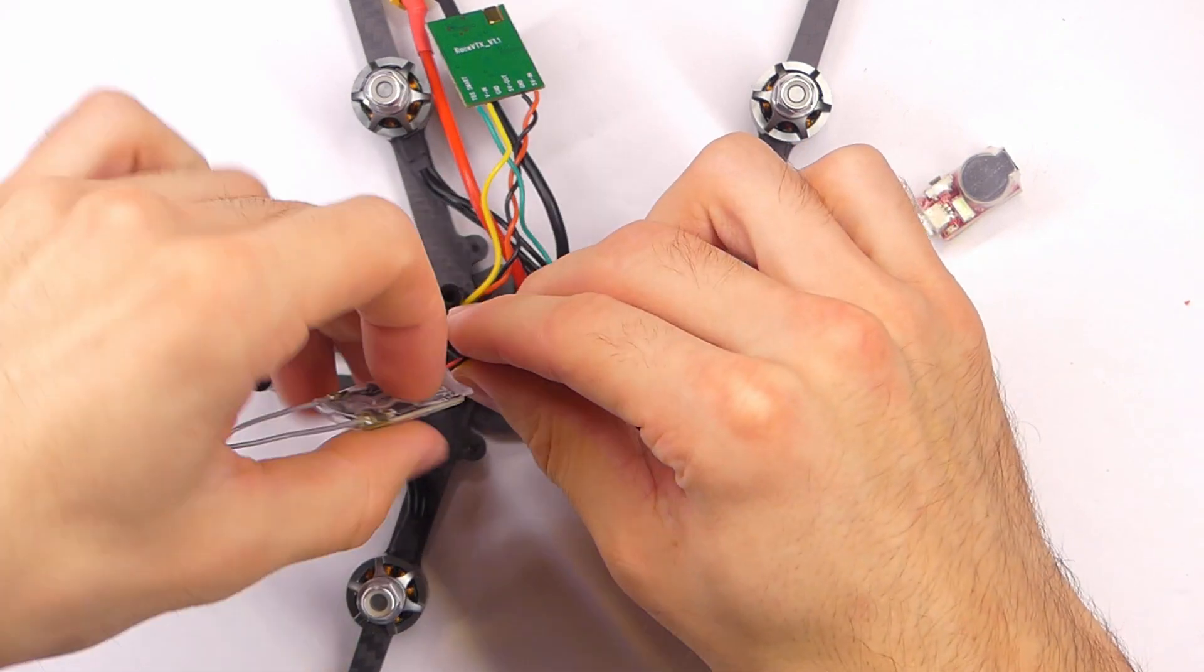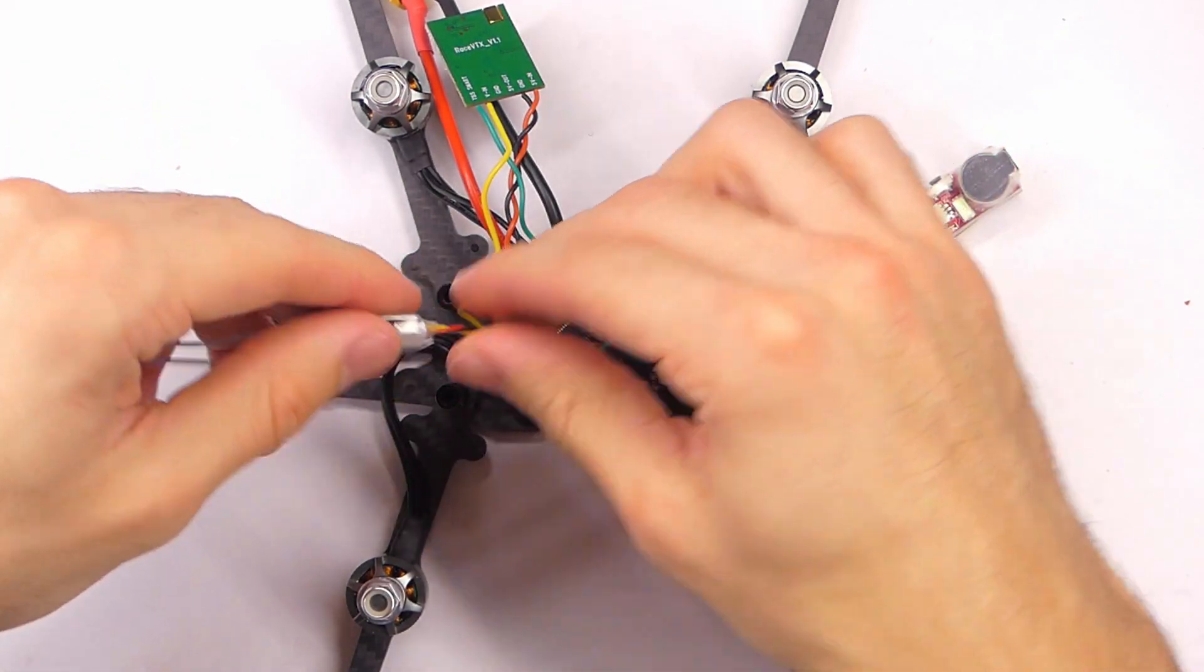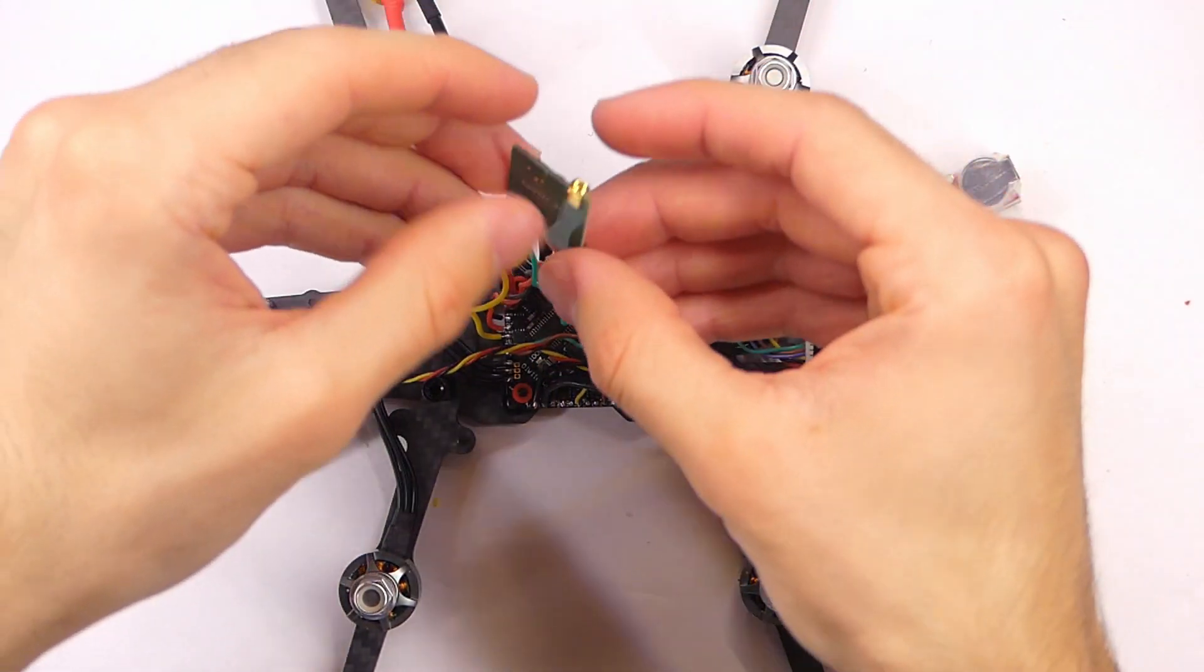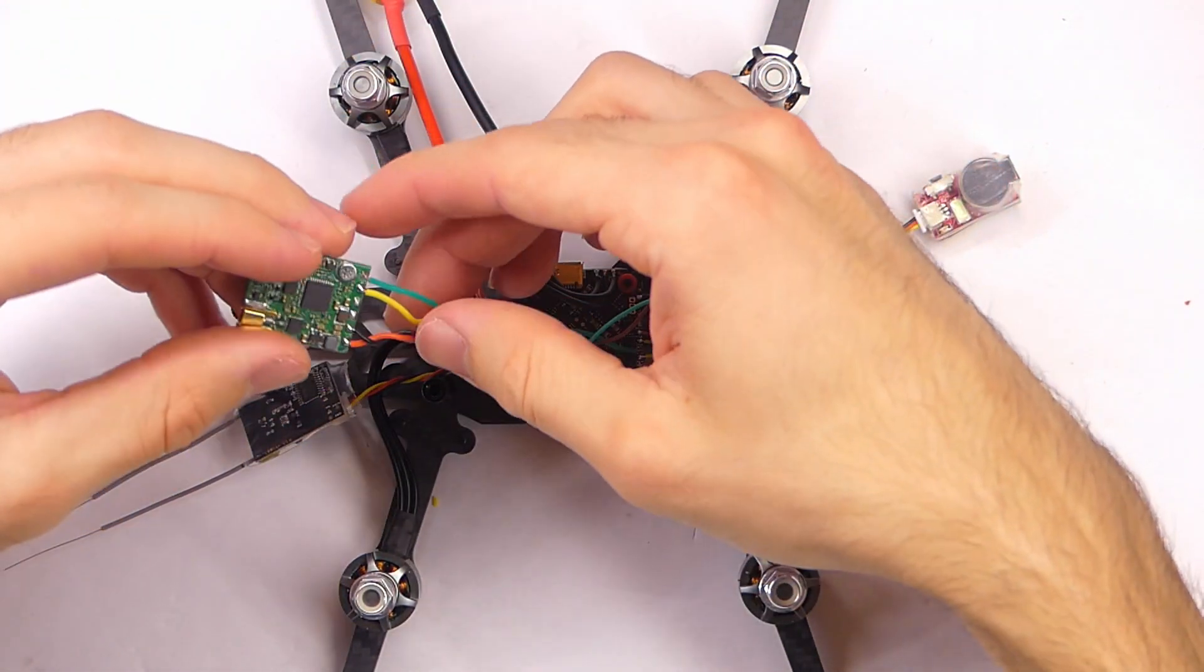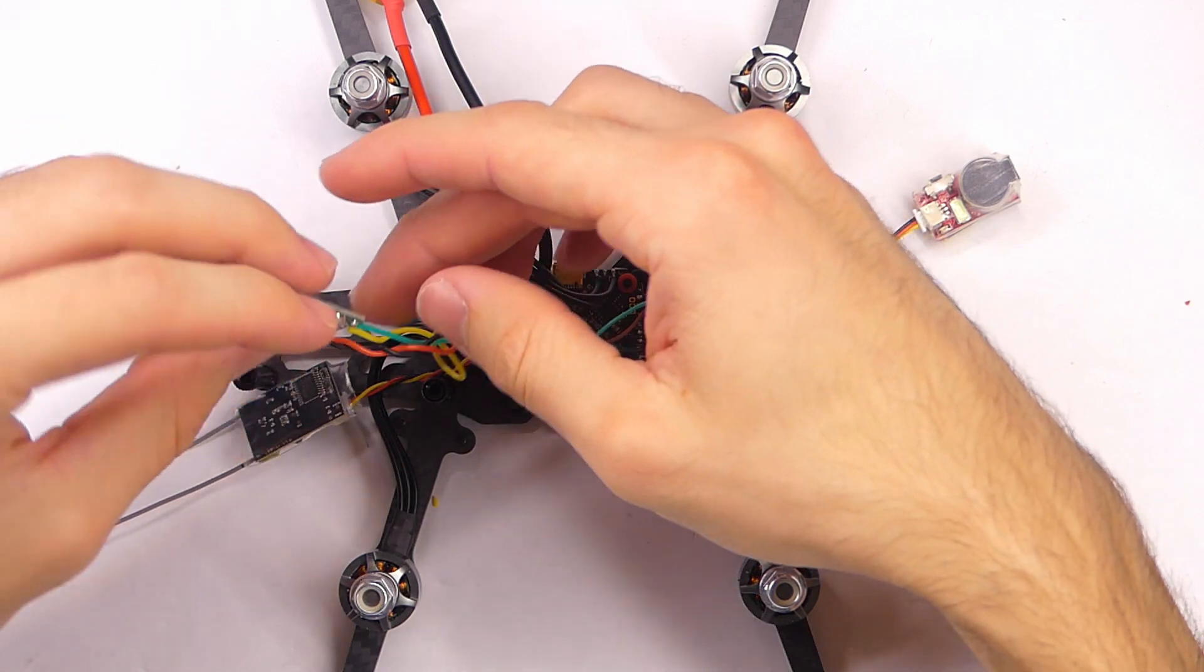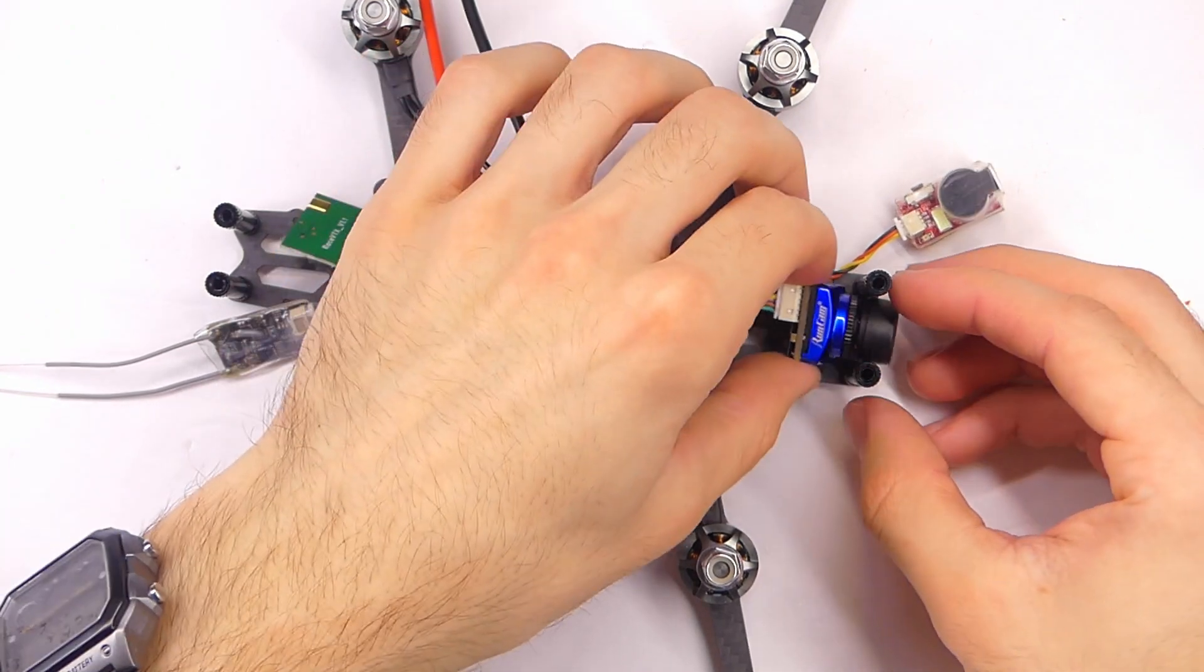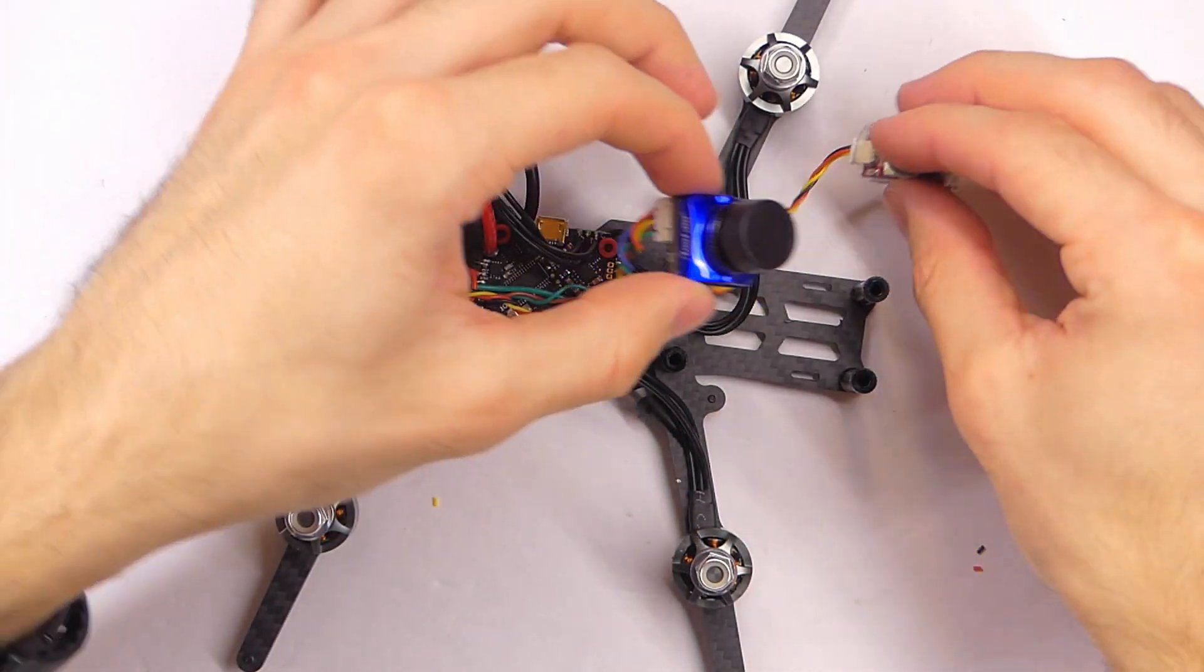It just kind of looks like that. But we'll go ahead and twist these wires a little bit. Give them a little bit of twist. Nothing too crazy, but a little bit of twist, and that will keep things tidy. Even stuff like this, we could give it a little bit of twist here. That really cleans things up a lot.